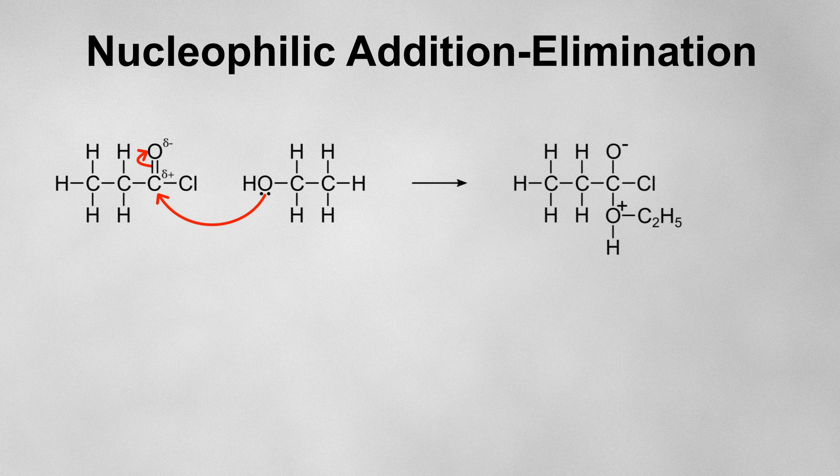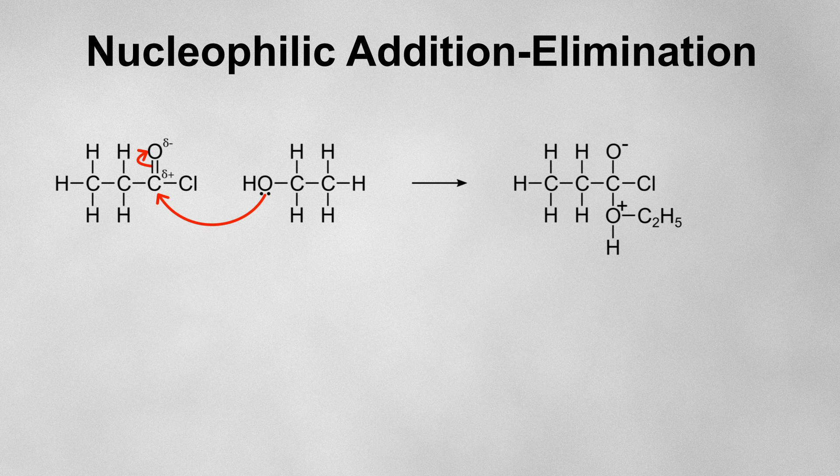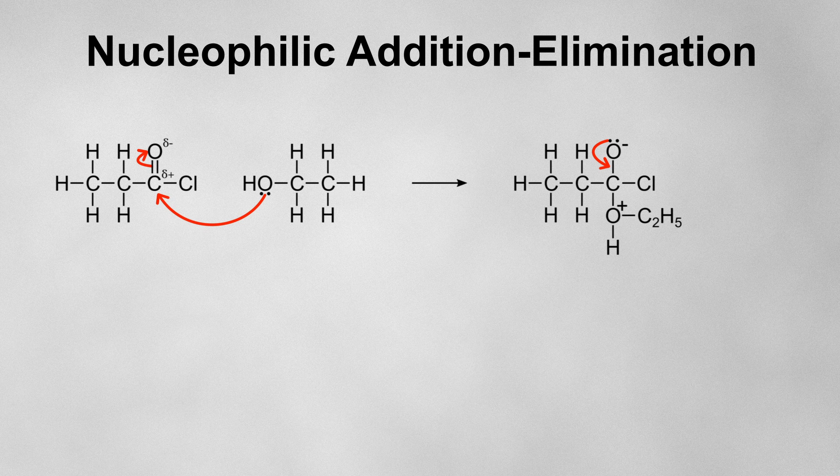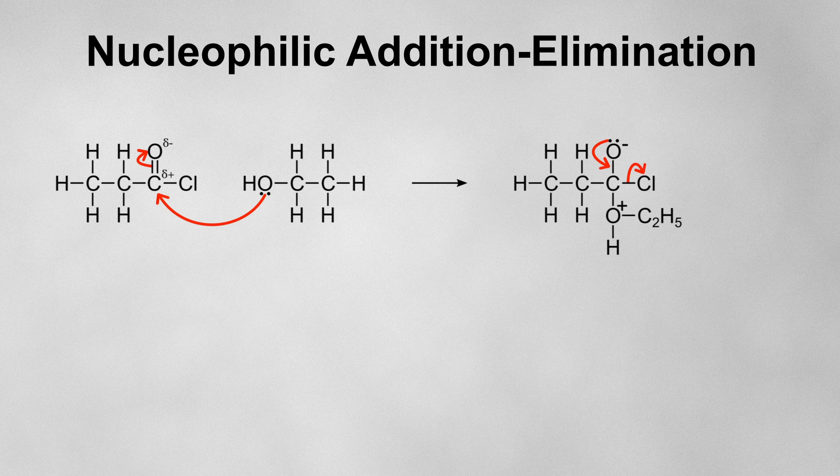Now, where this mechanism differs from regular nucleophilic addition is that, instead of a pair of electrons on the oxygen forming a bond with an H+ ion, they instead come back down to reform the pi bond in the carbonyl, which causes the electrons in the carbon-chlorine bond to move all the way onto the chlorine atom, kicking out a chloride ion.